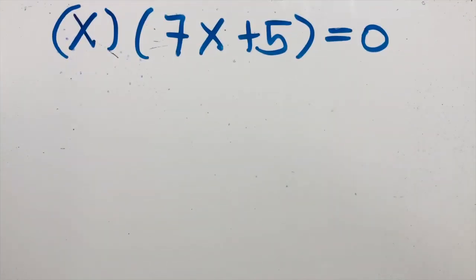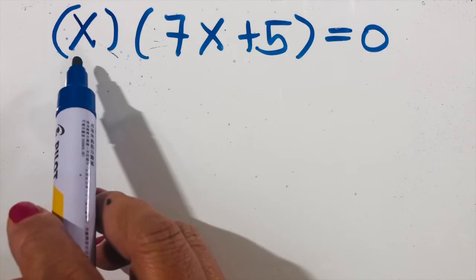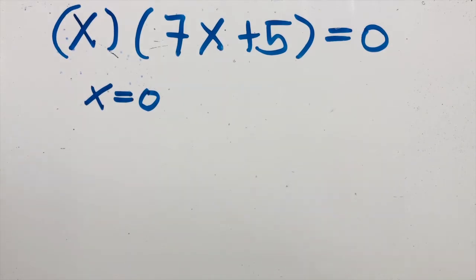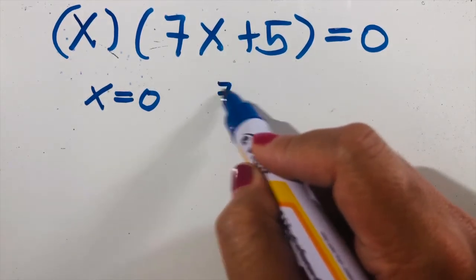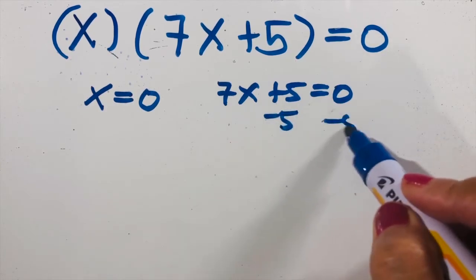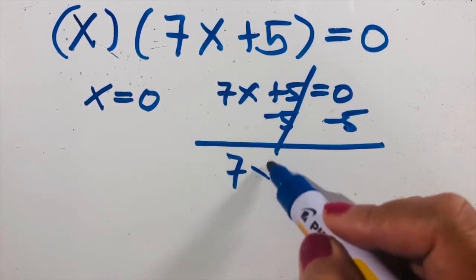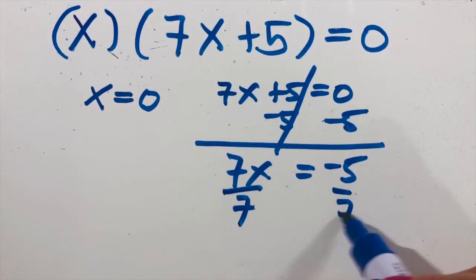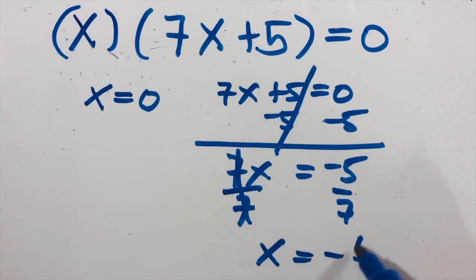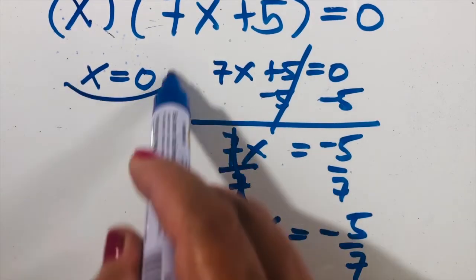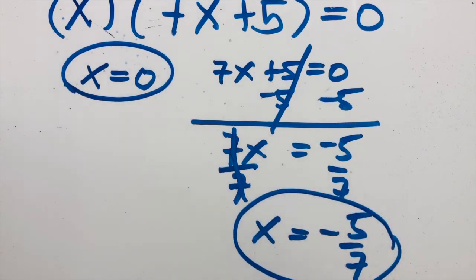Let us try x times (7x plus five) equals zero. As you can see, the first factor is just x, so x equals zero — we don't need to solve further. For b, 7x plus five equals zero: subtract five on both sides, giving 7x equals negative five, then divide both sides by seven, so x equals negative five over seven. The solutions are zero and negative five over seven.